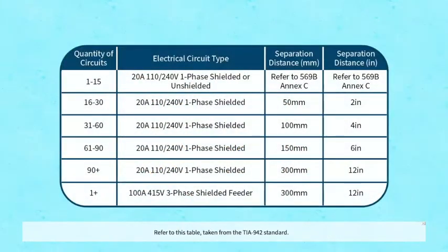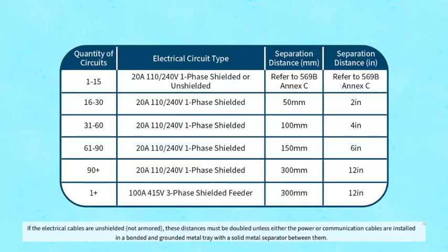Refer to this table taken from the TIA 942 standard. If the electrical cables are unshielded and not armored, these distances must be doubled unless either the power or communication cables are installed in a bonded and grounded metal tray with a solid metal separator between them.